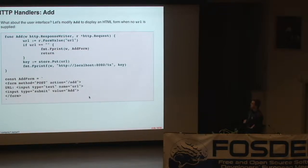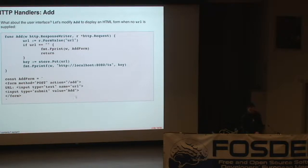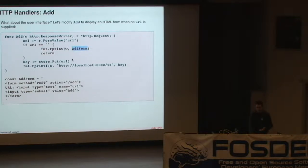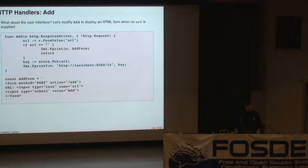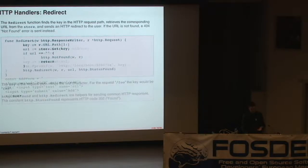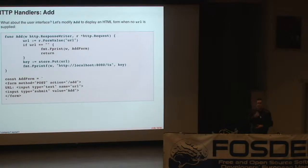I only showed you the post handler, but we also need the part of the handler that displays the form in the first place. If URL is empty, it means there's been no submission or an empty submission. In that case, I'll fprint this constant addForm, which is a string constant of an HTML form, and then bail out. But if URL is not empty, it means somebody's actually submitted a URL and I can put it in the store. This is an overly simplistic UI — obviously if you're going to build a proper web app, you'd put more effort into it.